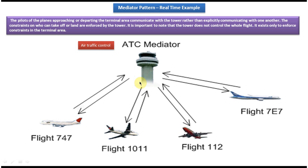Here ATC mediator is acting as a central point — all flights will communicate to the ATC mediator. What the ATC mediator will do is it will receive the message and route the message to the appropriate destination. Here the destinations are the flights.